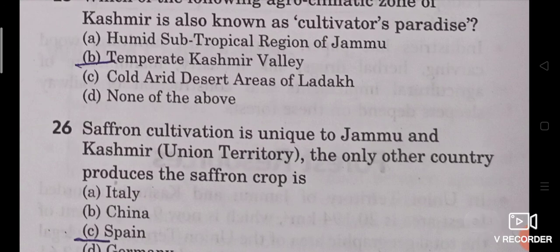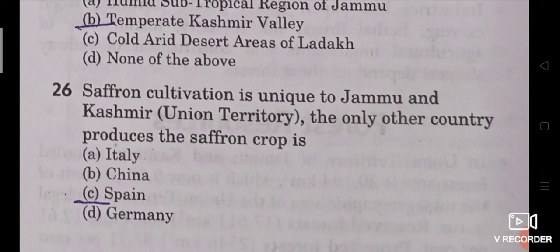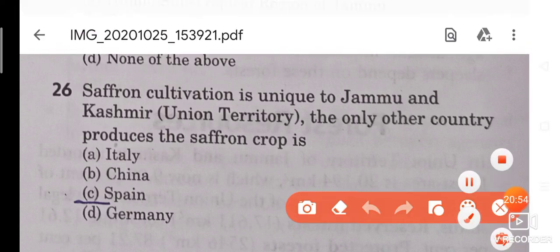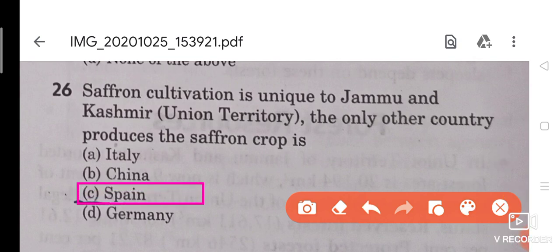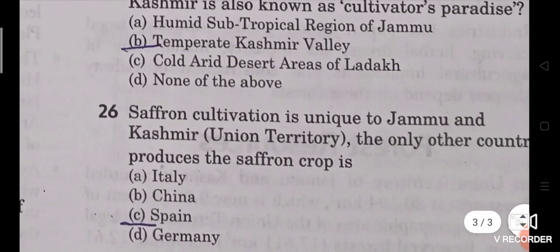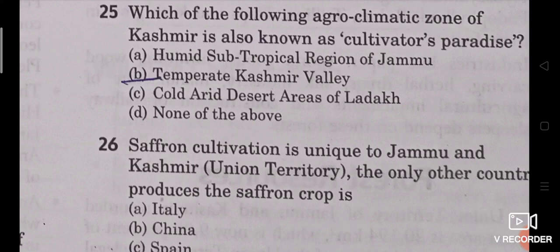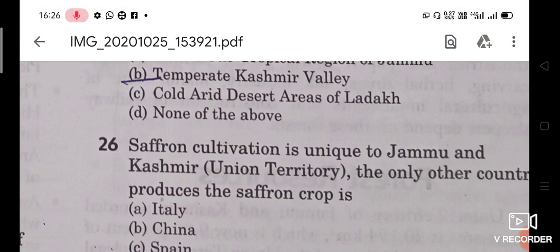Question 26: Saffron cultivation is unique to Jammu and Kashmir union territory. The only other country that produces the saffron crop — apart from J&K — is Iran. This topic covered agriculture and industrialization; hope you found the video useful.